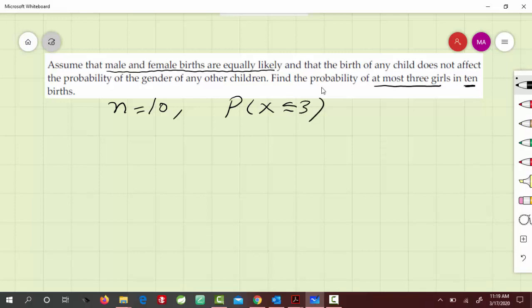In this case, this lowercase p would be 50 percent because male and female are equally likely, so it's 50 percent or 0.50.